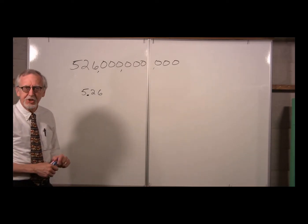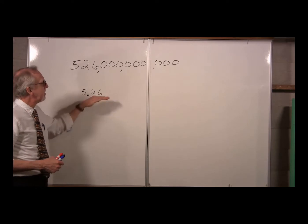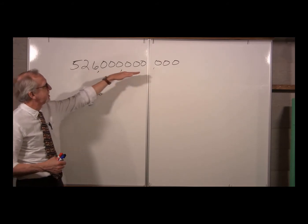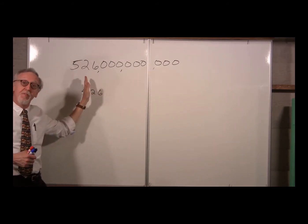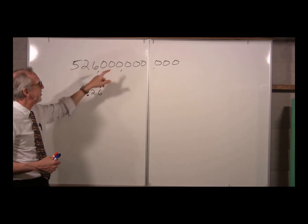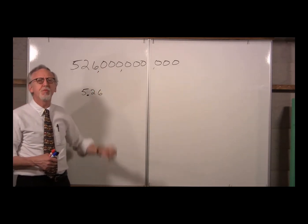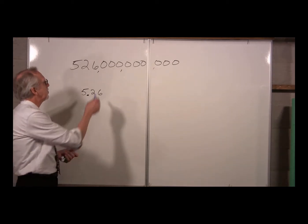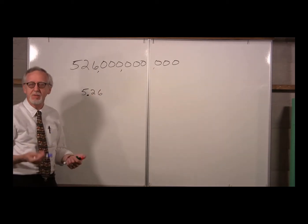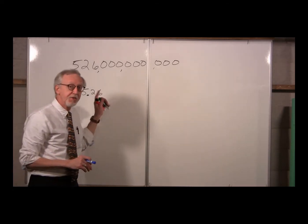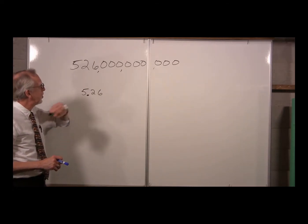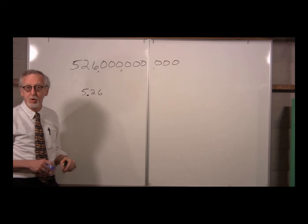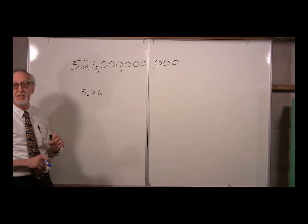One benefit of scientific notation is it's very easy to write as many significant figures as you want. To write 526 billion with 4 or 5 sig figs to emphasize that those zeros are actually significant, that's a little bit difficult. Some people use a notation where they put a line under the zeros, but I won't do that. If you want more than three significant figures, just write it in scientific notation.